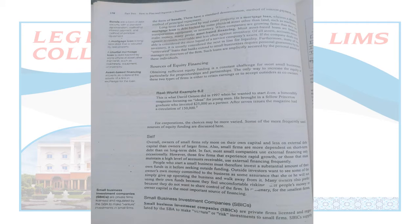We also discussed different bonds — mortgage loans and chattel mortgage loans. Then we talked about sources of equity financing: the most important source is self-funding, where you take your own generated amount and put it into the business. We also talked about small business investment companies, similar to banks, which provide loans and investment assistance to help run your business.